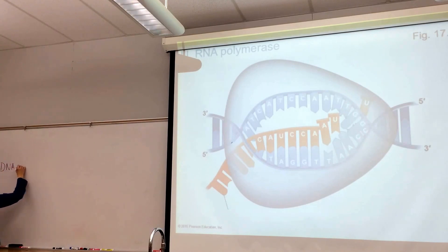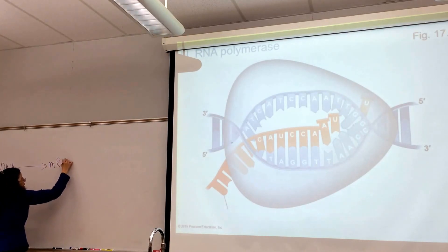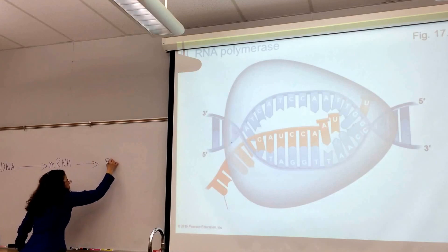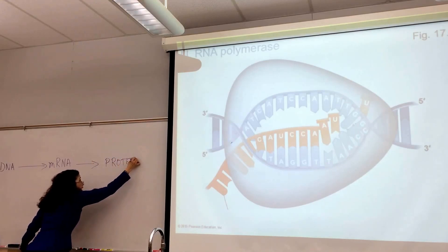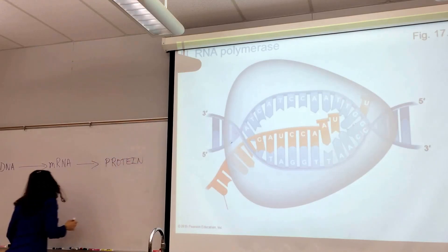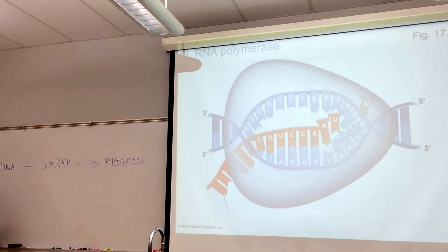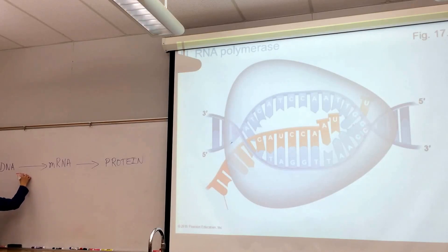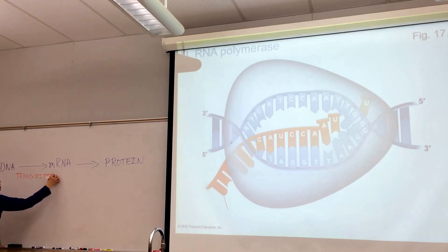DNA is utilized to make a strand of mRNA, which then in turn is utilized to make a protein — protein X — and that could be an enzyme, it could be a structural protein, et cetera. The process of taking that DNA and making an mRNA strand is called transcription, and by default, the other step would be translation.